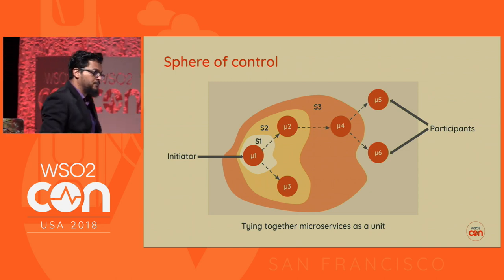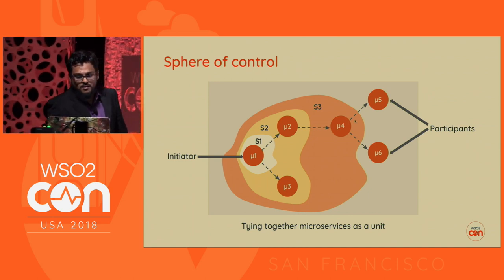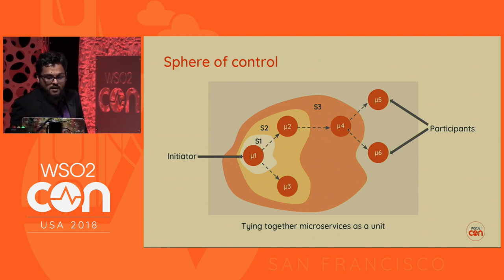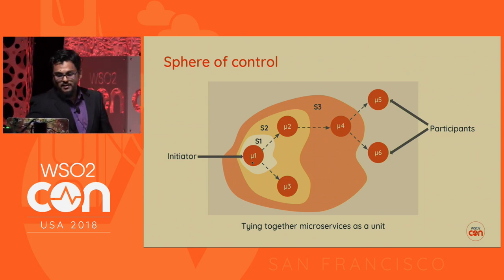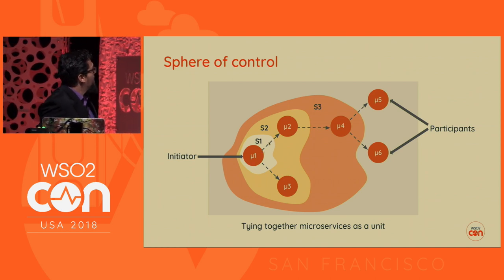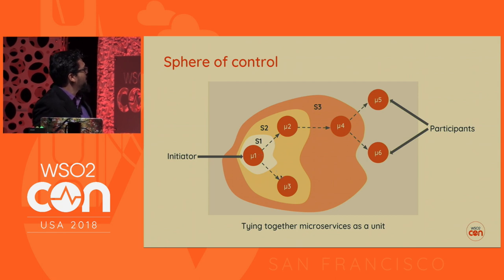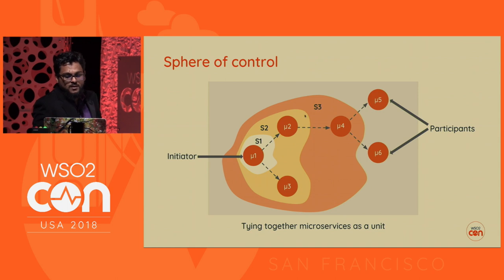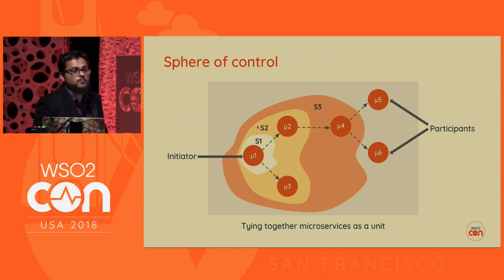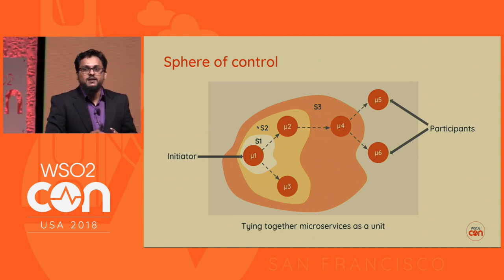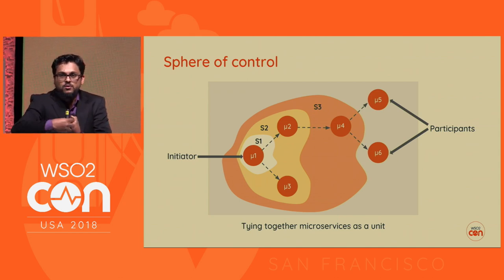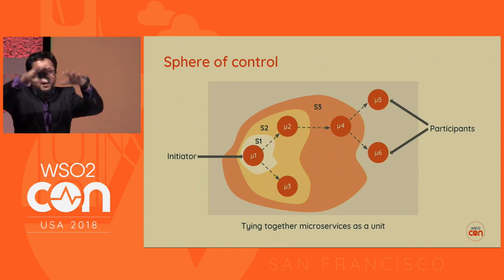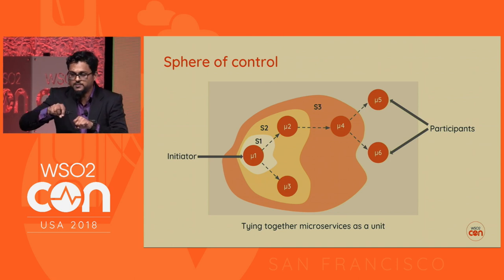This brings us to the concept of a sphere of control. Microservice one talks to two and three, and two talks to four and so on. What we have is an expanding sphere of control. When a transaction is initiated we have sphere S1, then microservice one interacts with two and three giving us a bigger sphere S2, then when two interacts with four we have an even bigger sphere S3. Five and six complete the sphere of control. Our transaction spans this entire expanding sphere.